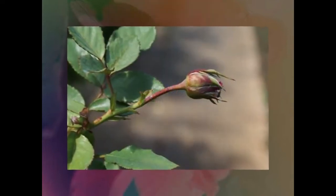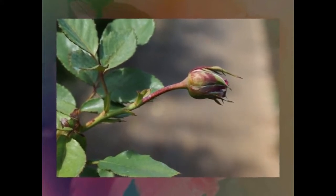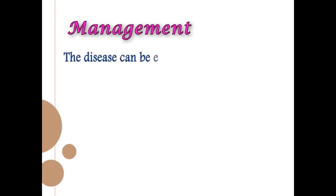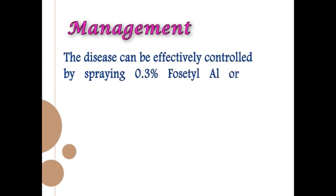The infection on flower buds occurs very early and leads to total dying of flowers. Relative humidity of about 85% and temperature around 18 degrees centigrade are optimal for multiplication of this fungus. The disease can be effectively controlled by spraying 0.3% fosetyl-aluminum or 0.2% metalaxyl MZ.